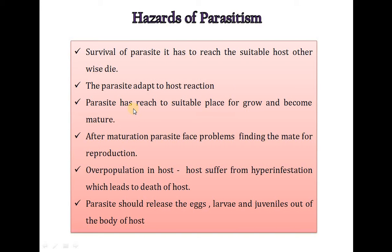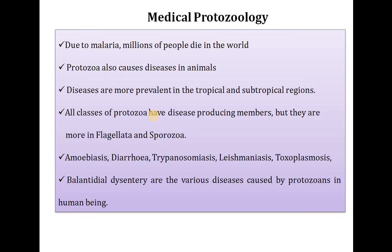The parasite must reach a suitable place to grow and become mature. After maturation, parasites face problems finding a mate or reproducing. Overpopulation in the host is another hazard — hosts suffer from hyperinfestation, which leads to death of the host and ultimately death of the parasite. The parasite must also release eggs, larvae and juveniles out of the host body in order to continue its life cycle.